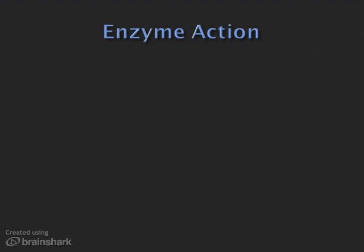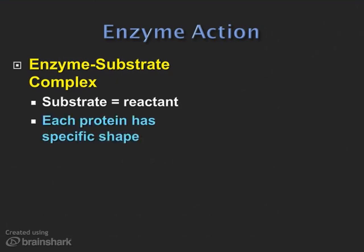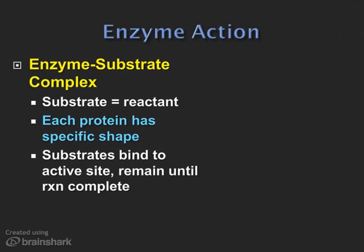Let's take a closer look at the enzyme-substrate complex. The reactant in an enzyme-catalyzed reaction is called a substrate. We have two things: the enzyme and the substrate. Enzymes are specific — each protein has a very specific shape, and the substrate it binds with has a complementary shape. The substrate stays bound to the active site until the reaction is complete.